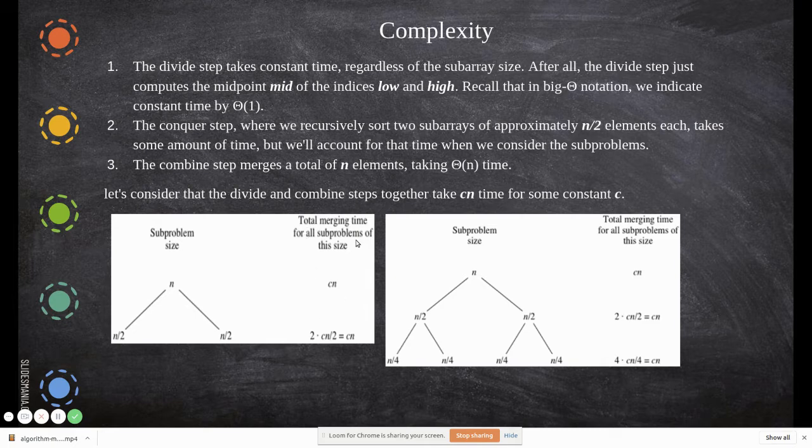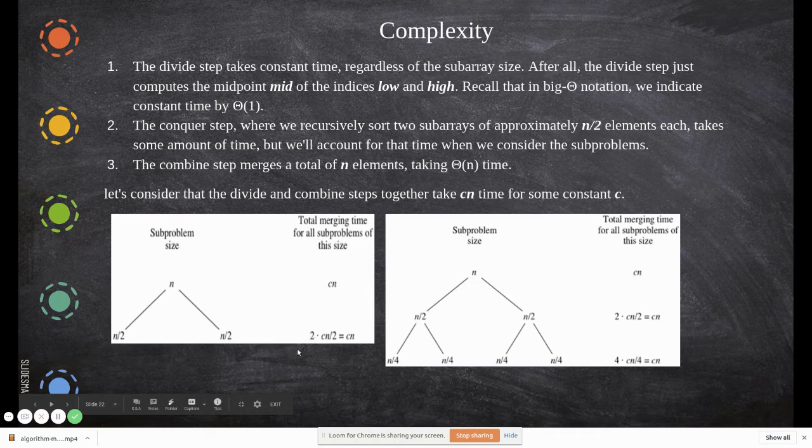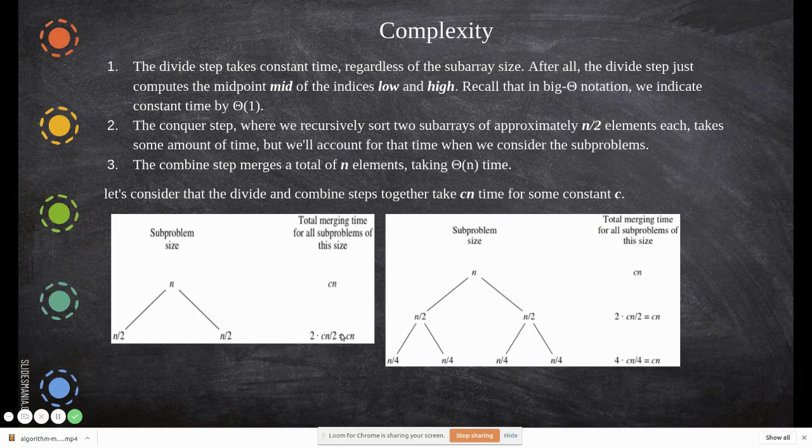Now, let's take the merging time for all the subproblems of this size cn. So when you merge these two into two, it is 2 times cn by 2. Two and two get cancelled, again it is cn.